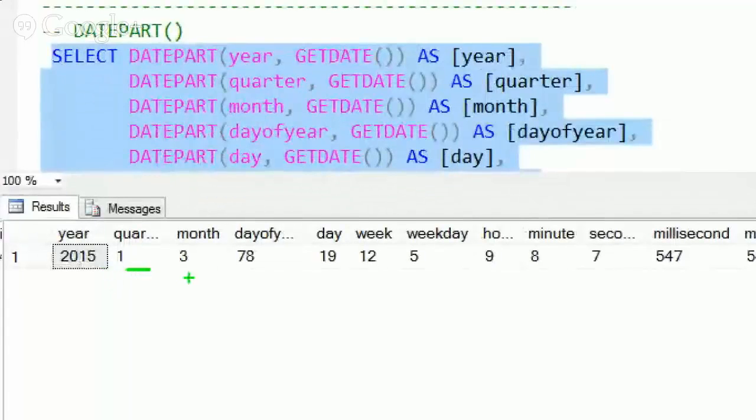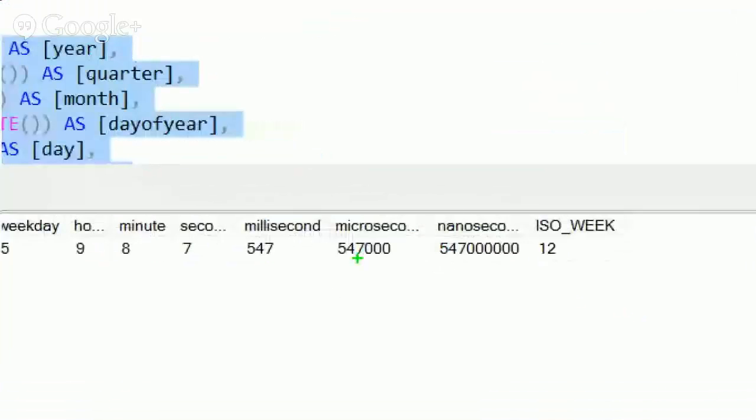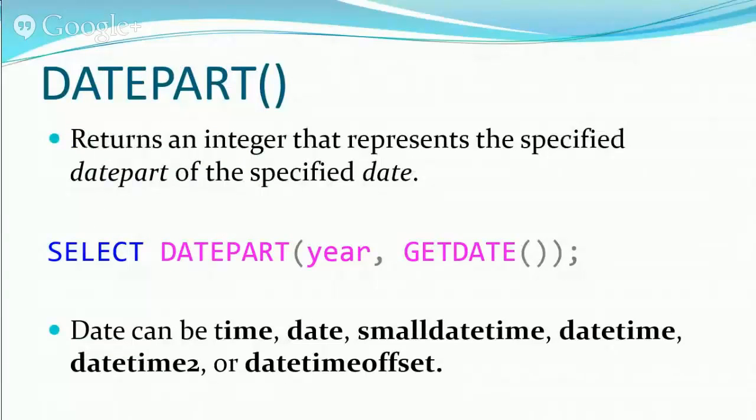Let's try running this and see what we get as our results now. The year is 2015, first quarter, third month, 78th day of the year, 19th of the month, 12th week, fifth weekday. So today's Thursday. Wednesday would have been the fourth, Tuesday the third, Monday the second, and Sunday the first. So it's one through seven for the days of the week. We've got the hour, minute, and second of our time here and then microsecond, nanosecond, and the ISO week. It really doesn't matter what your collation is set to - if you're asking for the day or hour or week, you're going to get it back from that datetime.